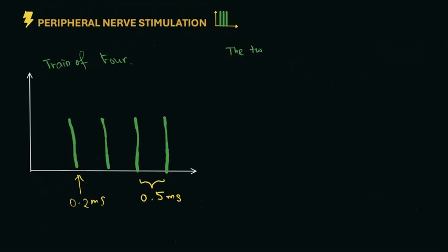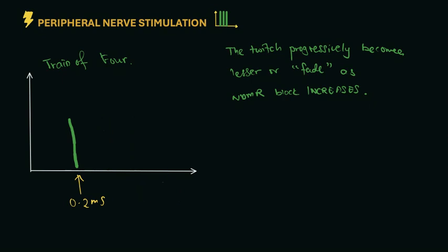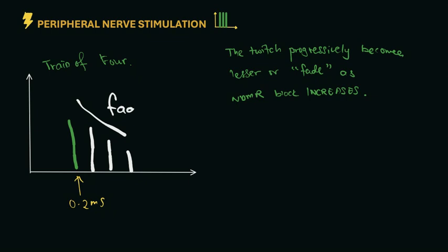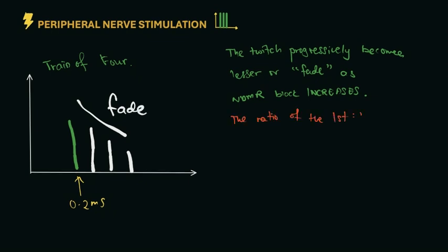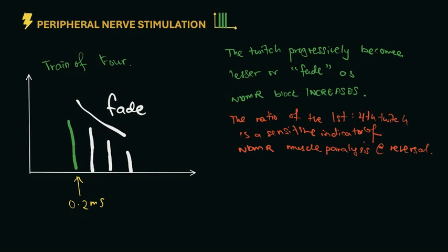Now let's analyze the actual train of four. What can happen if we give non-depolarizing muscle relaxant? The twitch will progressively become lesser or termed as fade. As you can see, the intensity reduces as non-depolarizing muscle relaxant block increases. The ratio of the first to the fourth twitch is a sensitive indicator of non-depolarizing muscle relaxant paralysis or degree of reversal. Clinically and visually, we can also determine the degree of blockade by seeing the number of twitch that goes missing or disappear. The disappearance of certain numbers of twitch will signify the percentage of blockade.